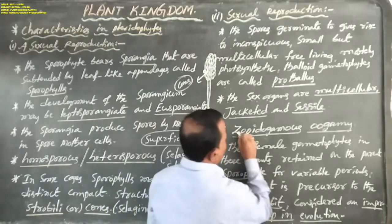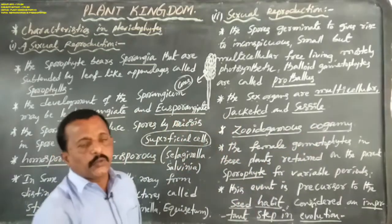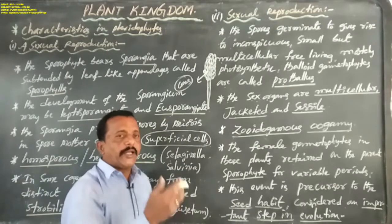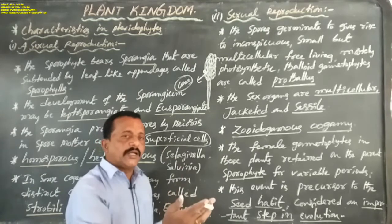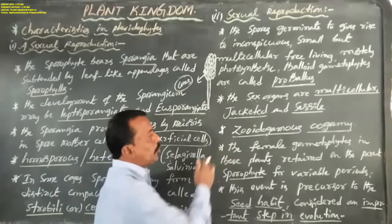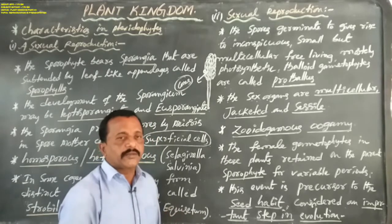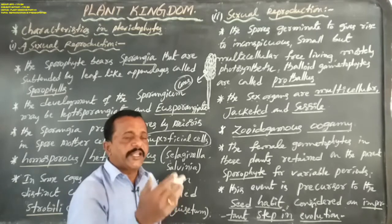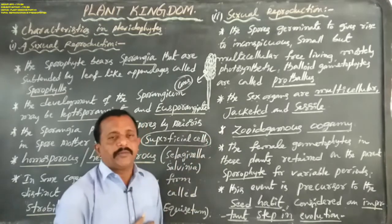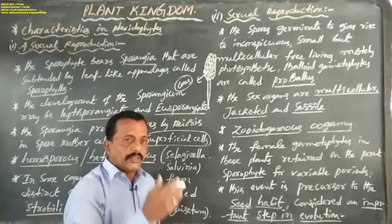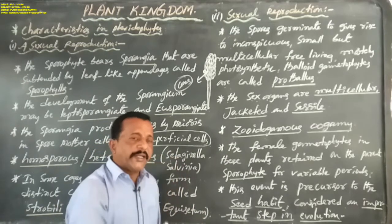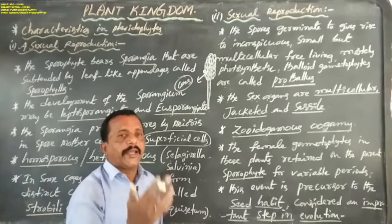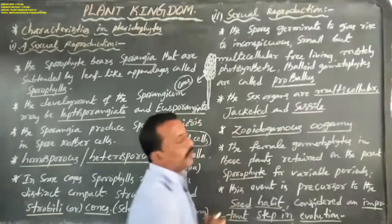Fertilization in pteridophytes is oogamous — the flagellated, motile male gamete fuses with the non-motile female gamete or egg. In both bryophytes and pteridophytes, fertilization takes place by oogamy, where the motile or flagellated male gamete fuses with the non-motile female gamete.